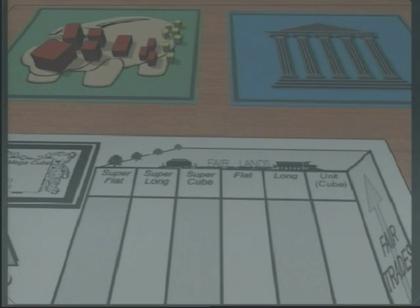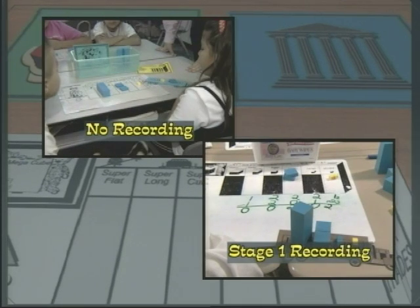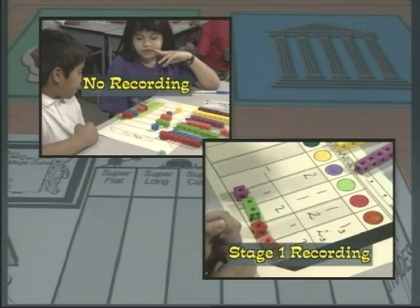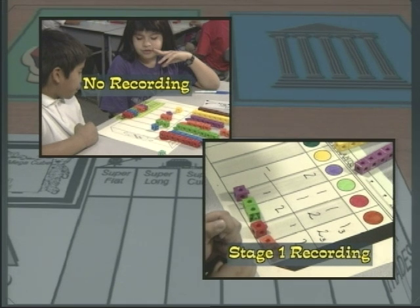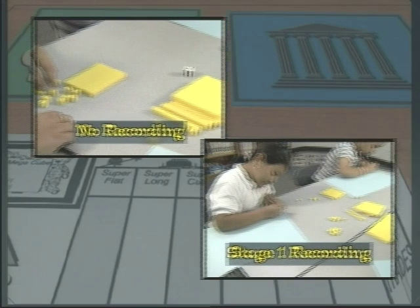As with importing, students begin by exporting Fairlands blocks in two land and three land with no recording, and then with stage one recording. They then do likewise with counters like multi-links, snap cubes, or unifix cubes in these and other lands with no recording, and then with stage one recording. They export in ten land with no recording and stage one recording.